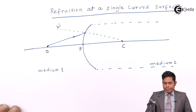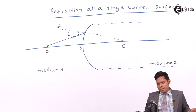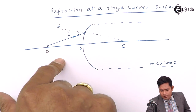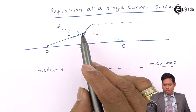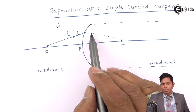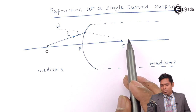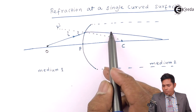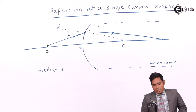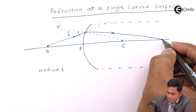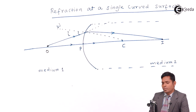This is the angle of incidence. The ray finds another medium — if this is glass placed in air, then this side is air and this side is glass, so the ray is moving from the rarer medium towards the denser medium. Therefore it will bend towards the normal. Instead of continuing in the original direction, it bends towards the normal and meets at a point — that point is your image.